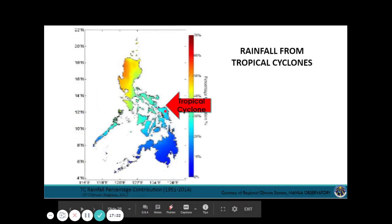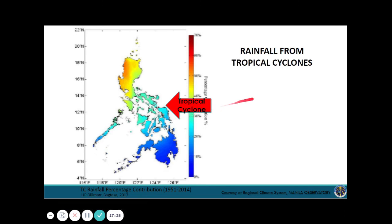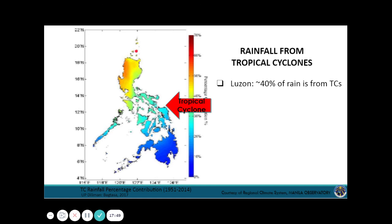Even though most tropical cyclones come from the Pacific, they still affect the western seaboard because they enhance the Southwest Monsoon. When a tropical cyclone aligns and the Southwest Monsoon is very active, the resulting rainfall can cause extreme flooding. This has happened before — in 2009, 2012 — and it keeps happening.